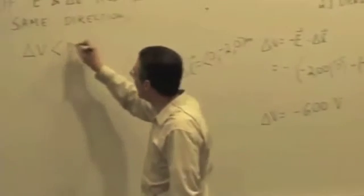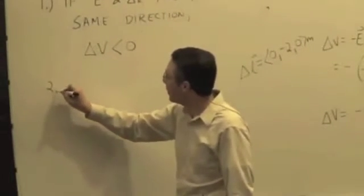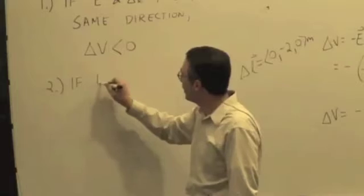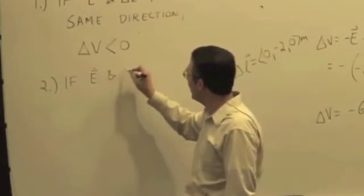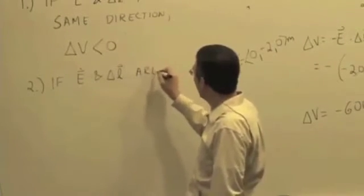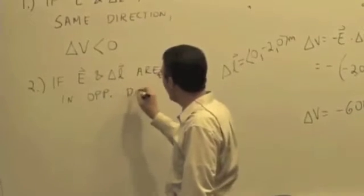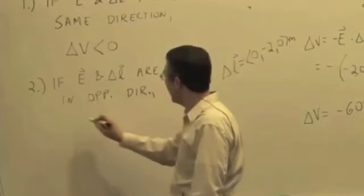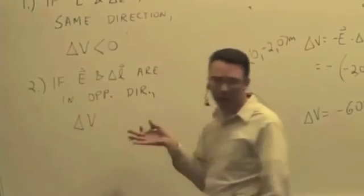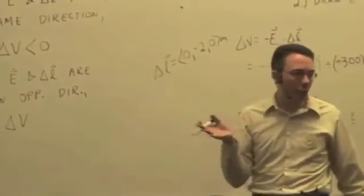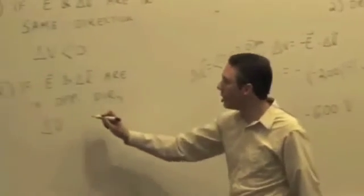So delta V is less than zero. If the electric field and delta L are in opposite directions, then delta V was positive. It was something greater than zero.